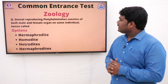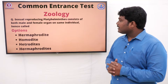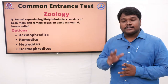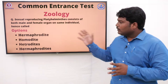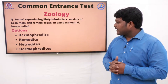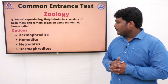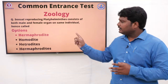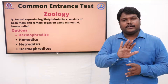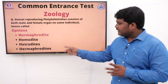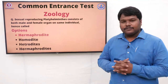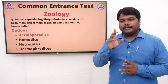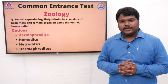Question 35: Sexually reproducing Platyhelminthes consist of both male and female organs on the same individual — hence it is called. Platyhelminthes has both male and female sexual organs in one living organism. Options: A) Hermaphrodite, B) Homodite, C) Heterodite, D) Hermaphrodites. The right answer is hermaphrodite. It is the only organism which contains both female and male sexual organs in one individual. Don't get confused between the singular and plural forms — hermaphrodite is the singular form, so option A is the right answer.